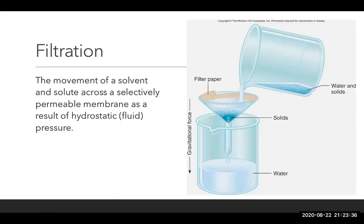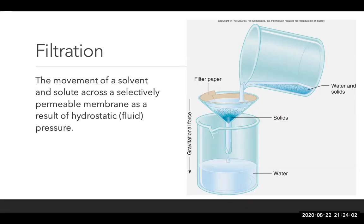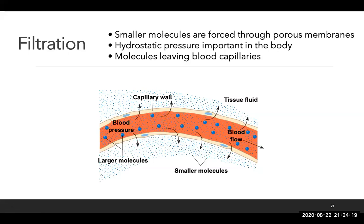Filtration is the movement of a solvent and solute across a selectively permeable membrane as a result of hydrostatic or fluid pressure. This is similar to a lab setup with a beaker, funnel, and filter paper — using the force of gravity, we pour water and solutes through the filter paper to separate out the solutes. What gets through the filter paper depends on the pore size of that paper; double-stacking the filter paper may reduce what passes through. Filtration is when smaller molecules are forced through porous membranes with holes.